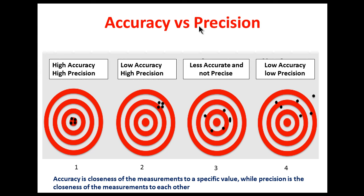Accuracy and precision are static characteristics. Accuracy can be defined as the degree of exactness, and precision is the closeness of the measurements to each other. We will see it in detail.